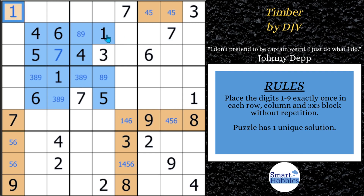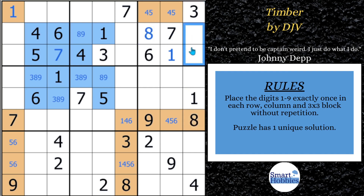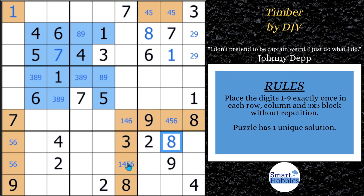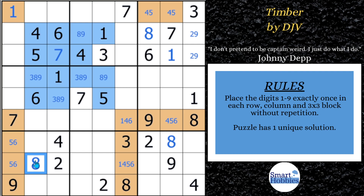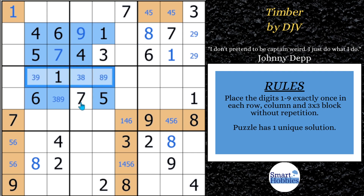Now we've got these 1s in rows 1 and 2, and this 1 coming up, so there's only one place left for a 1 up in block 3. And we've got this 8 coming up — there's only one place left for an 8. This is going to be a 2 or a 9 naked pair. That 8 comes down, this 8 cuts across — there's only one place left for an 8. With 8s in rows 7 and 9, the only place left for an 8 in block 7 is right there. And now with this 8 we can solve this for a 9, giving a 3, 8, 9 naked triple.